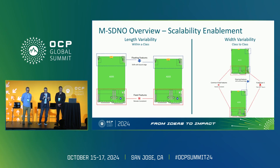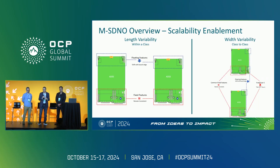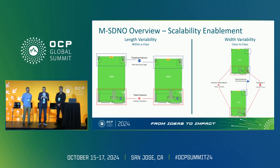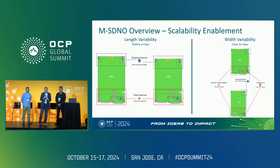On the width, the class is rigid — the width does not scale. It is defined by that class: a class A being 210 millimeters wide and a class B 250 millimeters, for example.